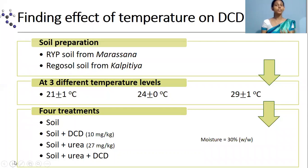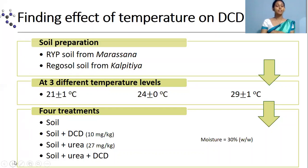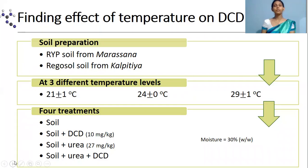After a week, four different treatments were introduced to each of these batches: the first was the control treatment, the second was soil with DCD, the third was soil with urea, and the final was soil with urea plus DCD. During the whole experiment, gravimetric moisture content was maintained at 30%. After the 48-hour incubation period, nitrate concentration was measured using the rapid colorimetric method.